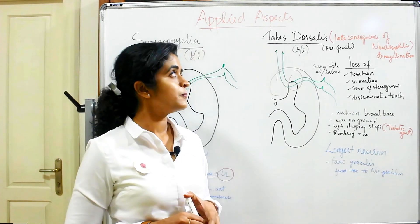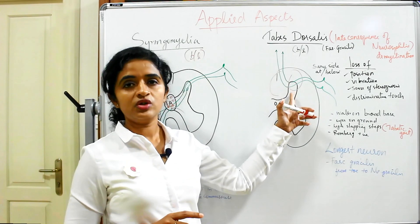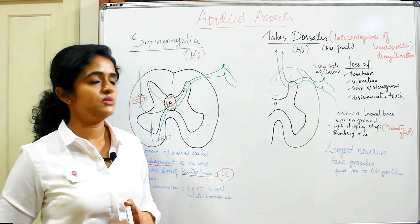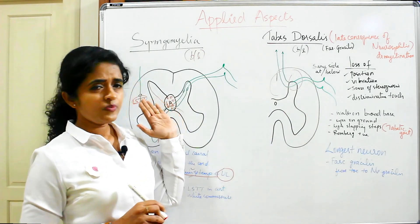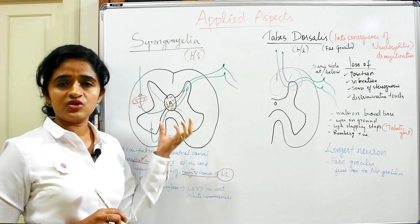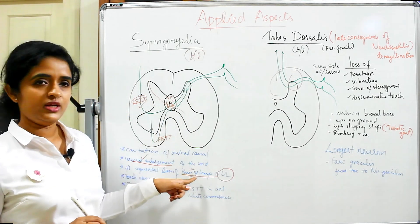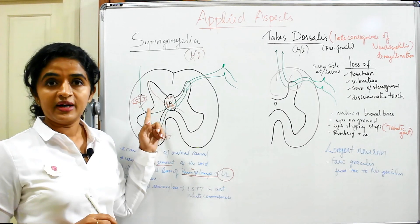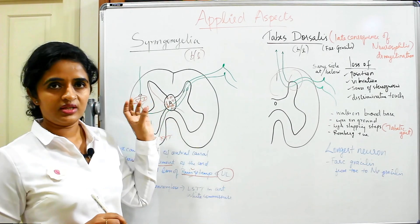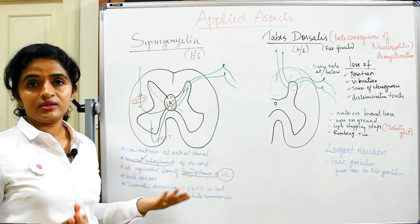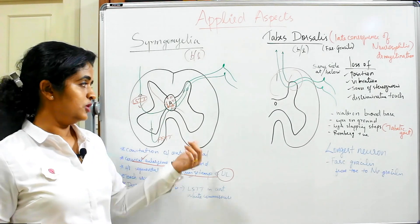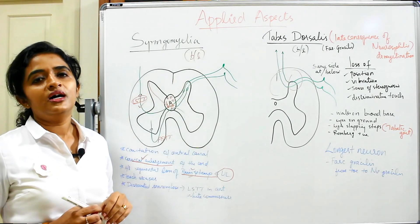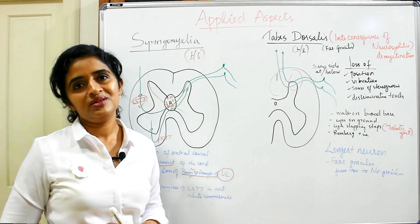To summarize: tabes dorsalis affects the posterior column and posterior root of the spinal cord, usually presents bilaterally. Syringomyelia is a cavitatory lesion of the central canal of the spinal cord; the first sensation lost is pain and temperature, and it presents bilaterally since the lesion is in the midline. Touch is usually spared due to the anteriorly placed anterior spinothalamic tract and the intact posterior column fibers, which is why this condition is known as dissociated sensory loss.